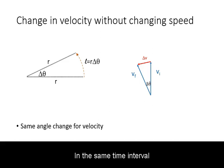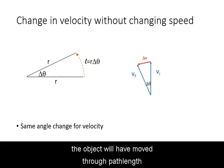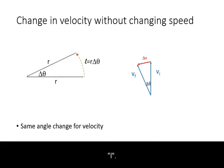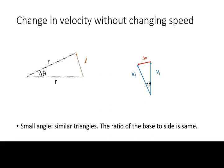In the same time interval, the object will have moved through path length L. For small time intervals, this allows us to set up similar triangles, where the base in its ratio to the sides is the same.